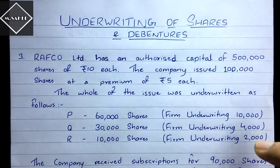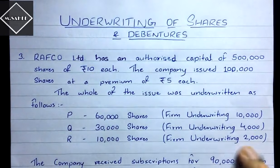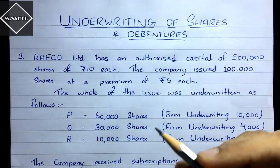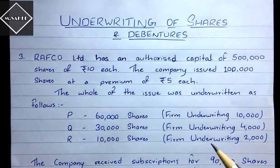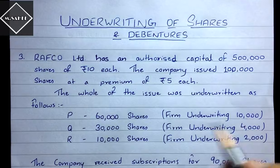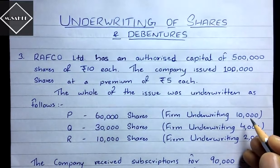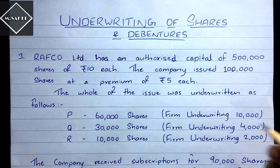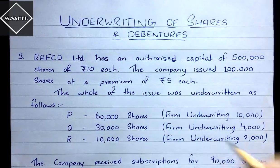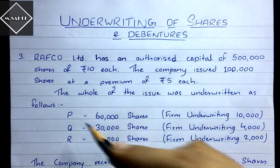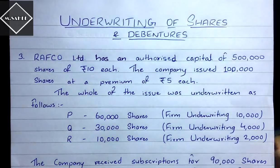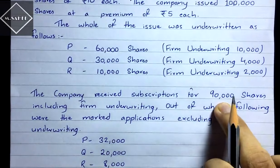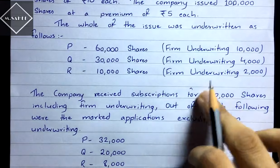This problem is based upon firm underwriting. The firm underwriting applications are: P — 10,000, Q — 4,000, and R — 2,000. P told Rafco Limited that he wants to purchase 10,000 shares for himself. This is what firm underwriting means — the underwriters give a definite commitment to purchase shares irrespective of public subscription.